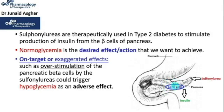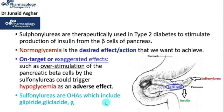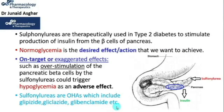It is also important to know that chronically overworked beta cells could subsequently exert negative effects on beta cell function, which may lead to insulin secretory failure with the passage of time. Sulfonylureas are oral hypoglycemic agents (OHAs) which include glipizide, gliclazide, glibenclamide, and a few other members.